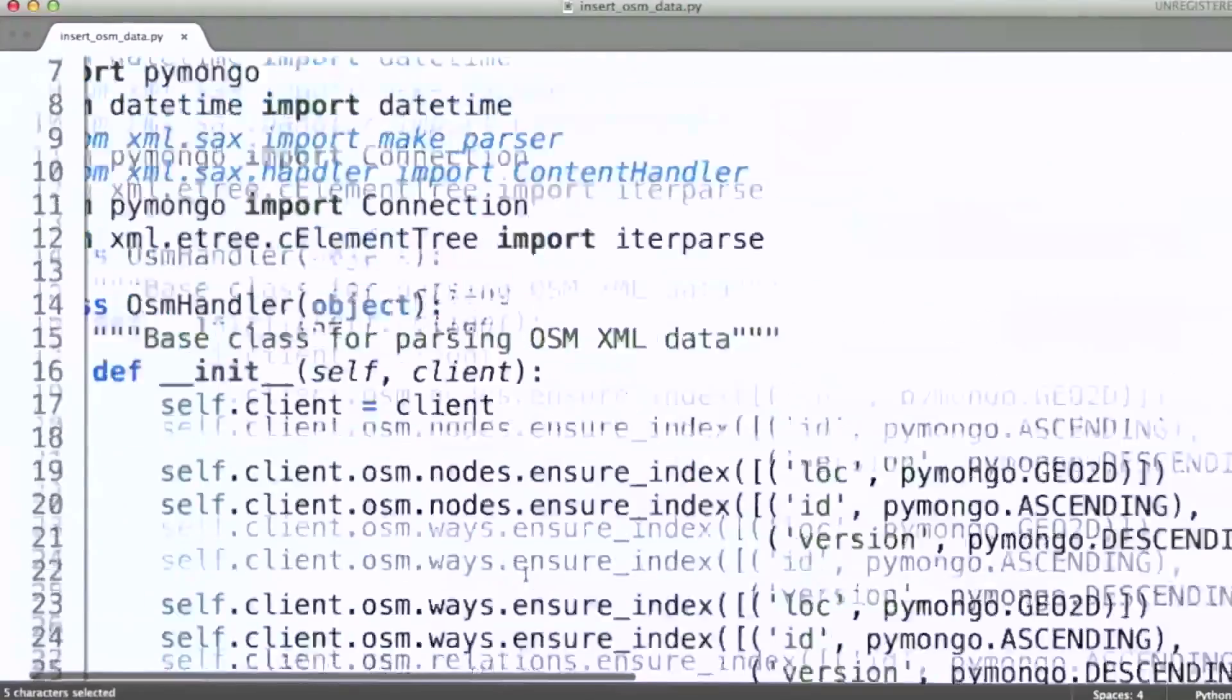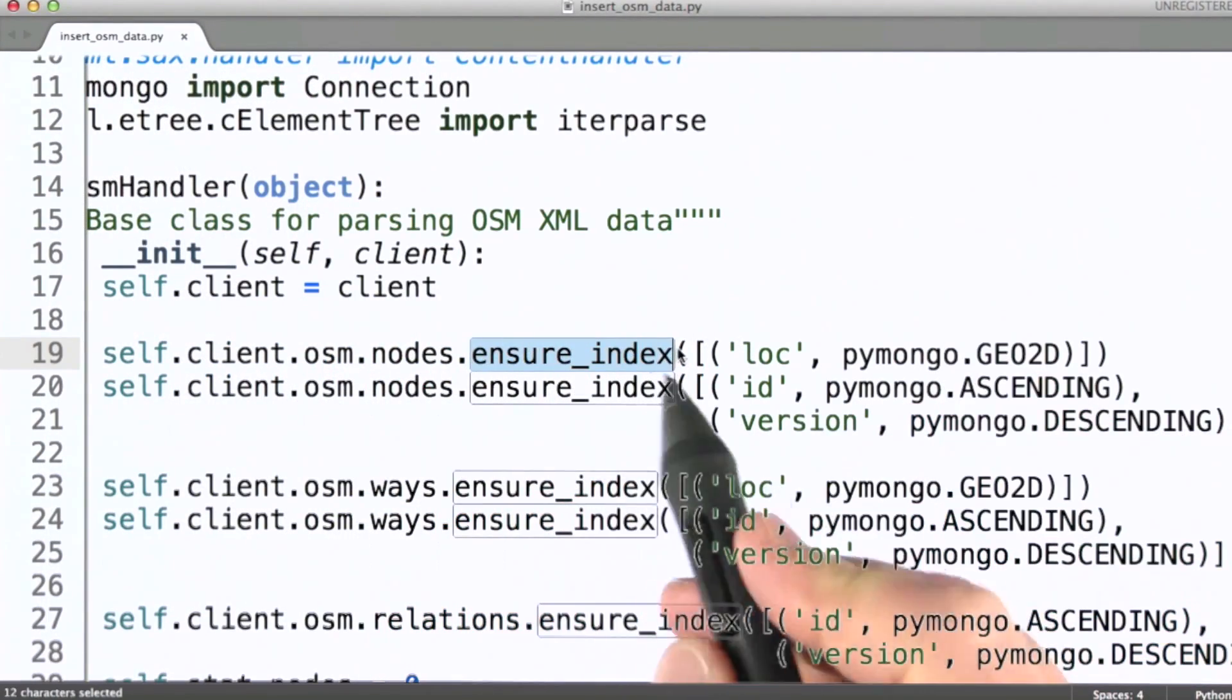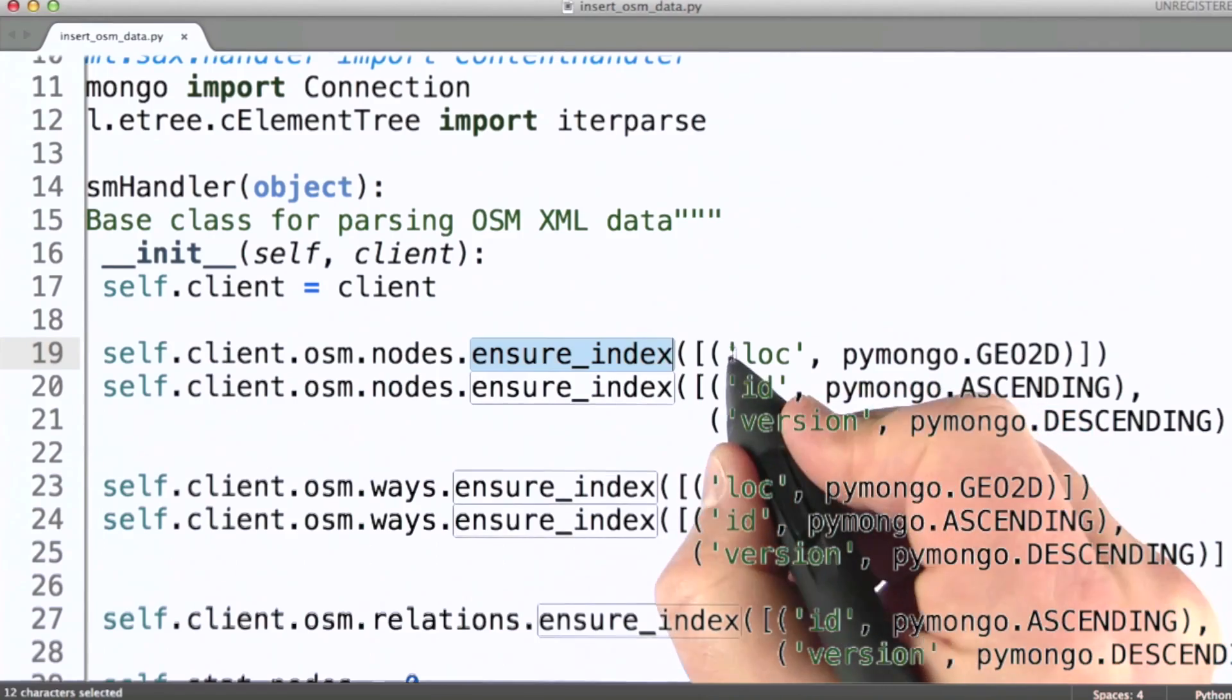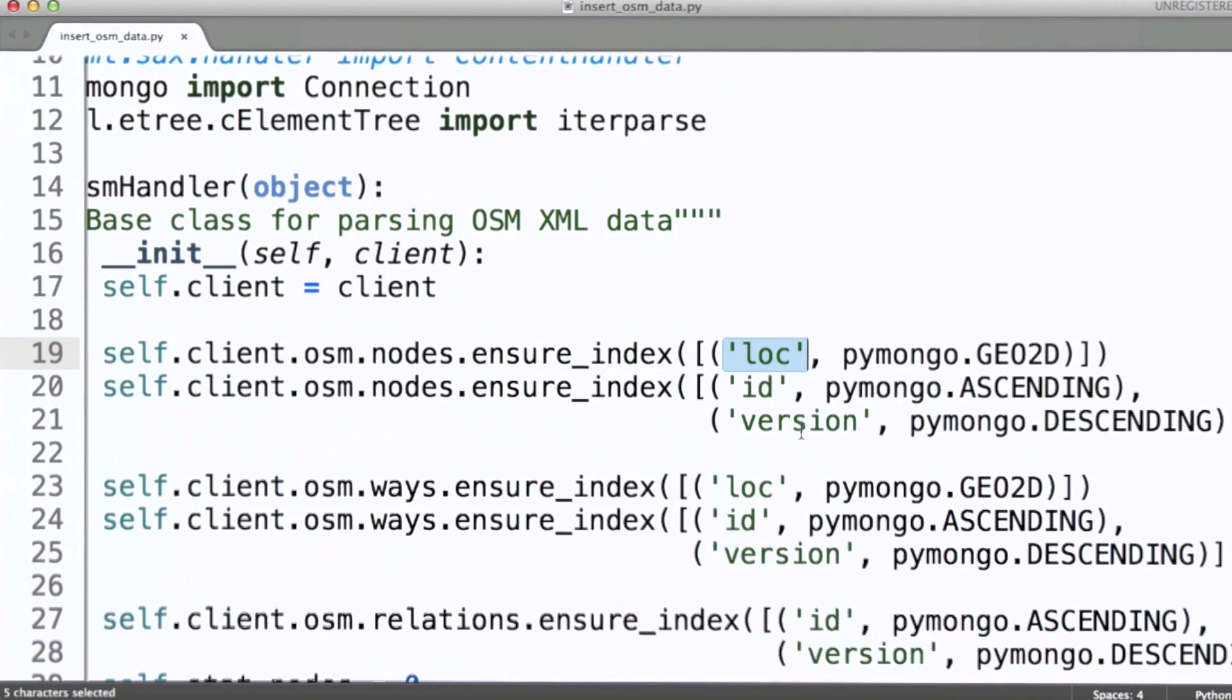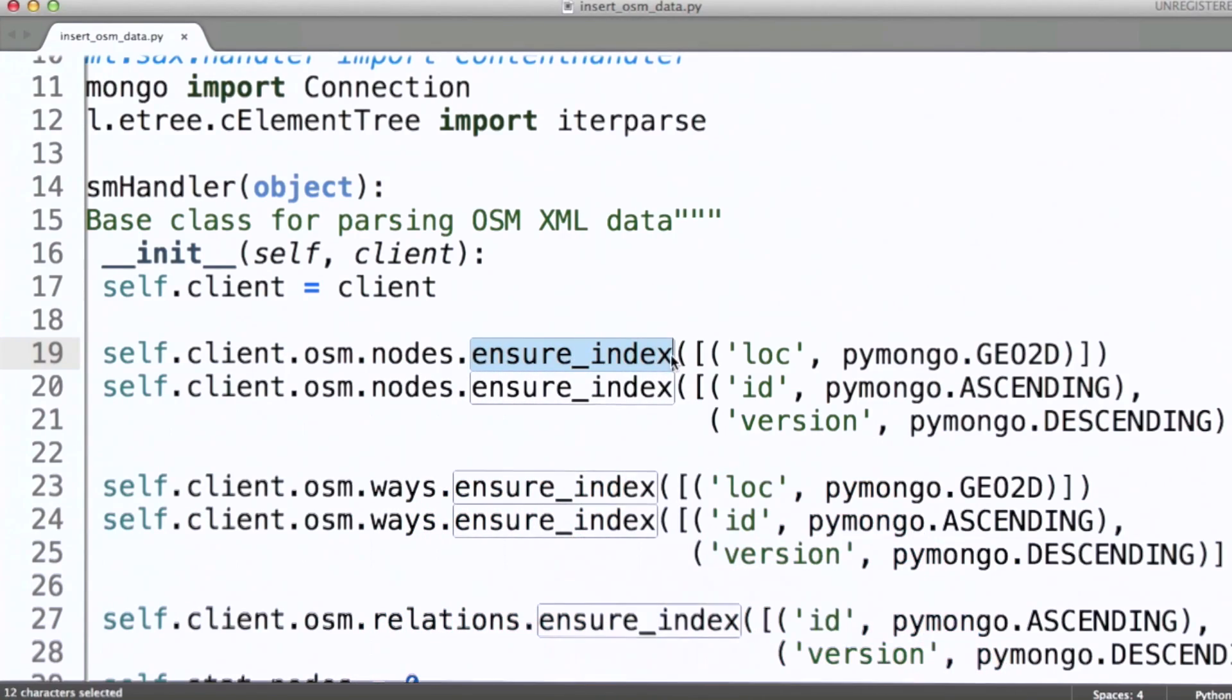Using that location field at the very top of this code, ensure index is called using that location field which stores the XY coordinates for nodes that are parsed out of the OSM XML file. The syntax for ensure index is slightly different in PyMongo. It matches the syntax for the language here which of course is Python.